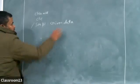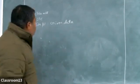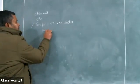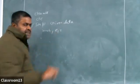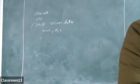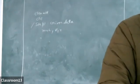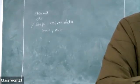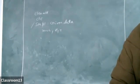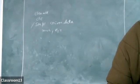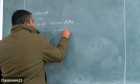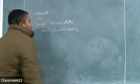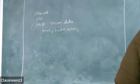Step 1: given data. So for a gear train as shown in the figure, gear 1 is the driving gear. We are transmitting 5 kilowatt power at 720 RPM. Number of teeth are 20, 50, 30, and 60.